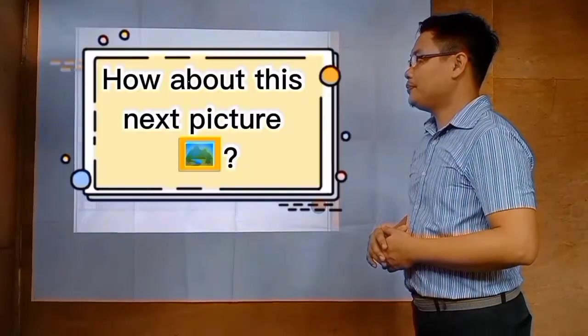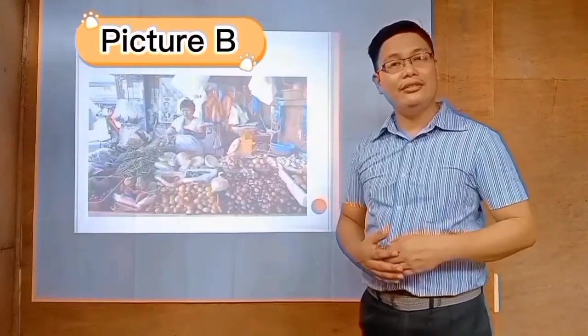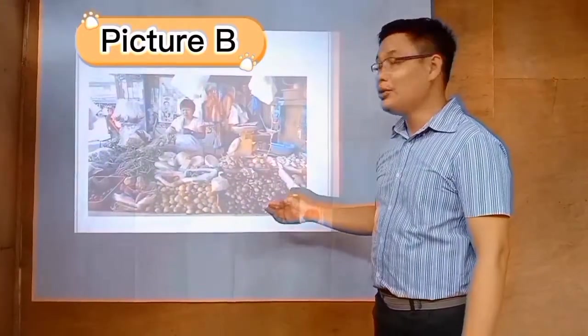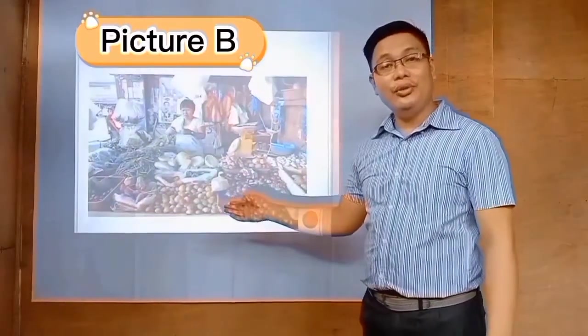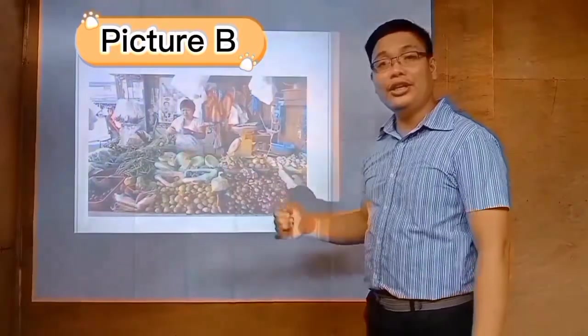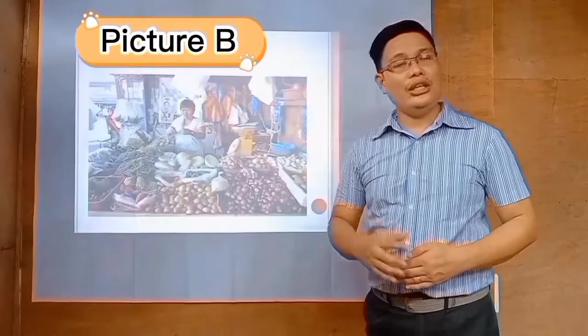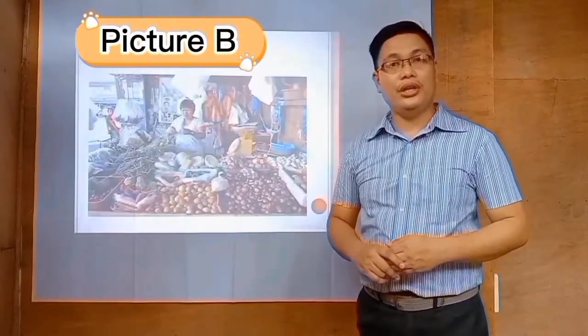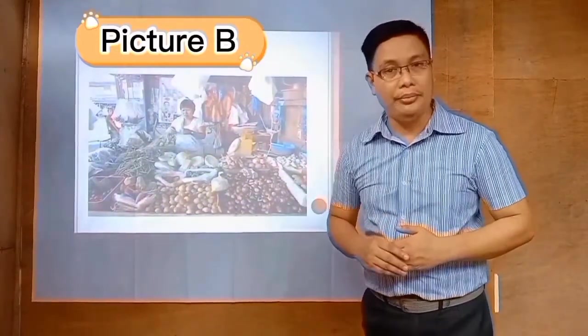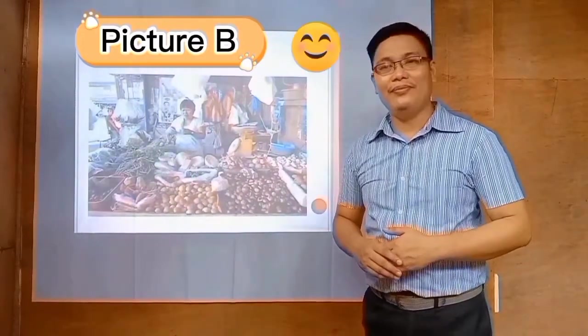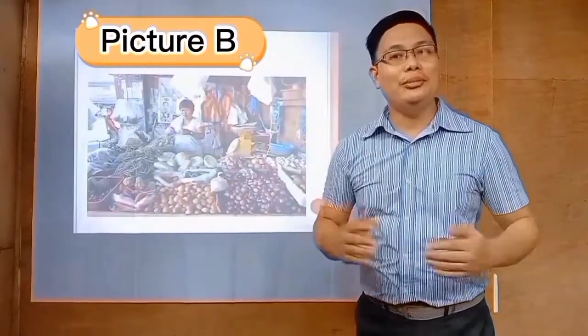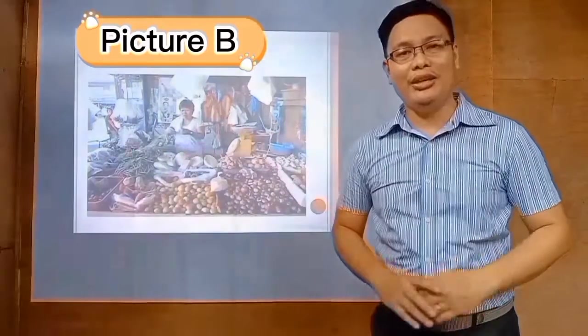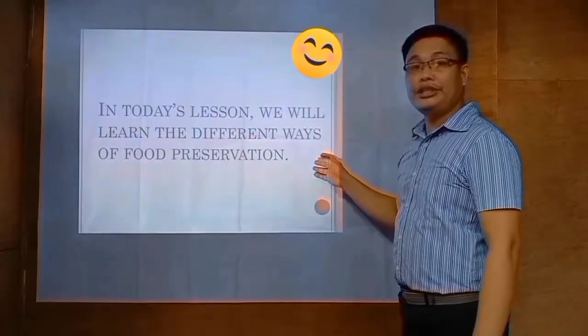How about the next picture? Jubert please stand. What can you say on the picture? There is a lady who is selling vegetables and other products. Jubert, what do you think will happen if all these vegetables will not be sold at a certain period of time? They will spoil. In today's lesson we will learn about the different ways of food preservation, but before that let's have a group activity.